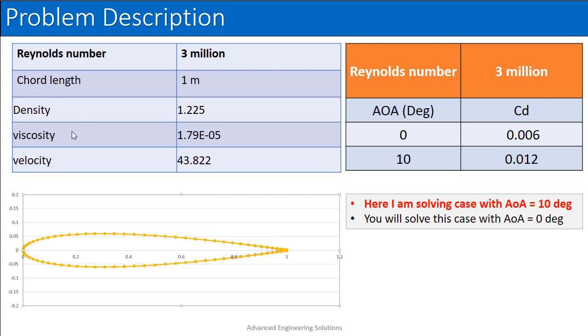We have a NACA 0012 aerofoil and the Reynolds number is 3 million and the chord length is 1 meter and density is assumed to be of the air is 1.225 kg per meter cube. Viscosity is 1.79e to the power minus 5 Pascal second. So velocity will come out to be 43.822.